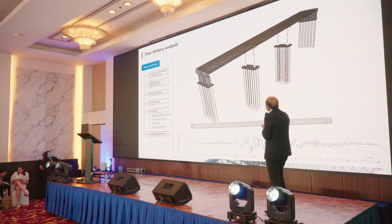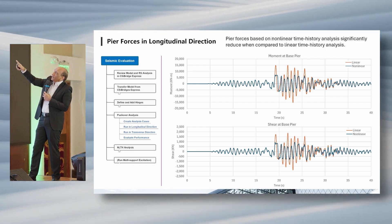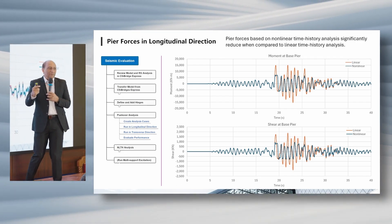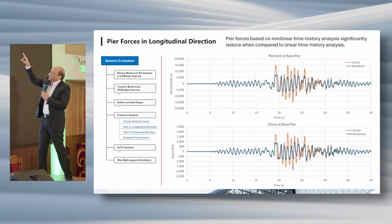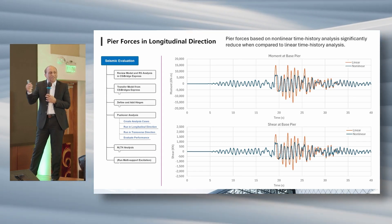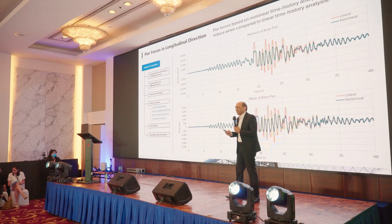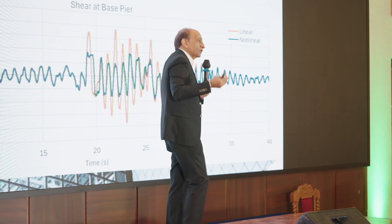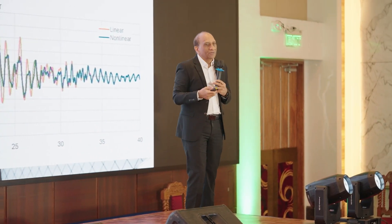We can compare the reduction in moment response at different time steps between linear and non-linear. The orange line is linear and the blue line is non-linear. You can plot any quantity over time as the ground is shaking. Now there is a lot to compare: linear time history, non-linear time history, pushover, and response spectrum — comparing displacements, moment, shear, energy, and whatever other quantities you need.